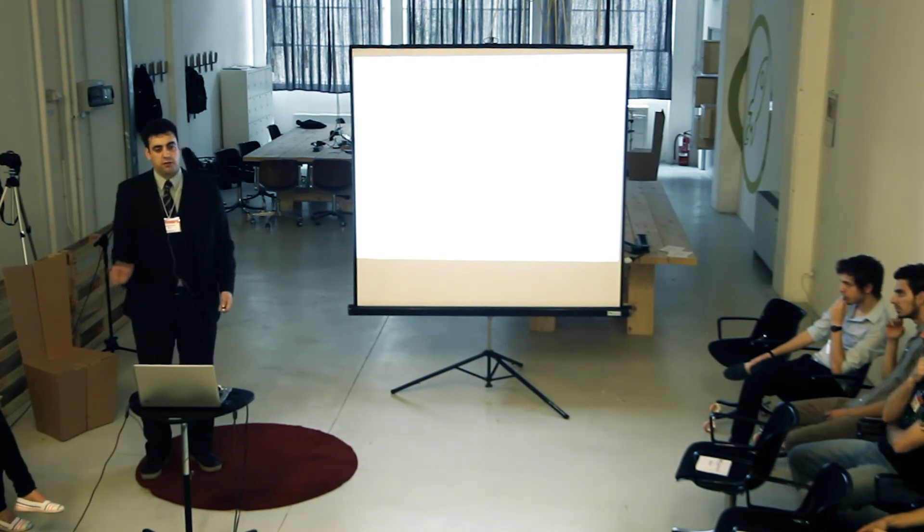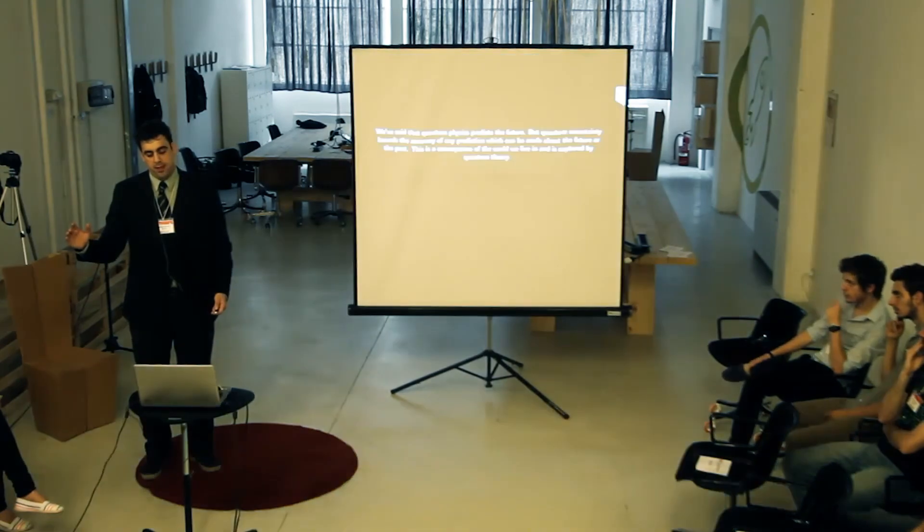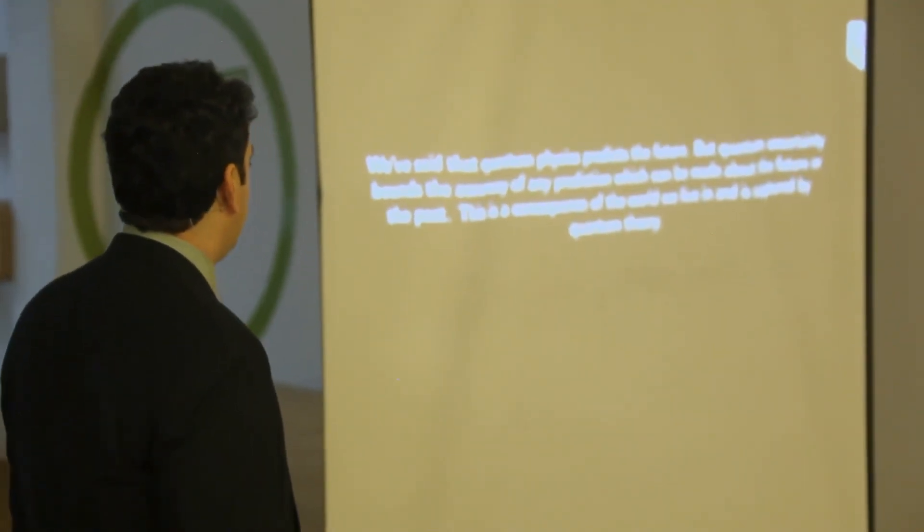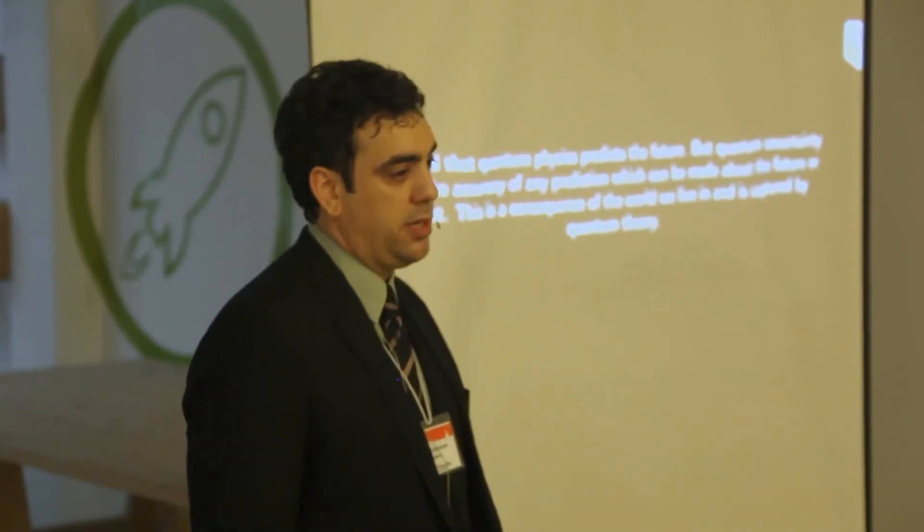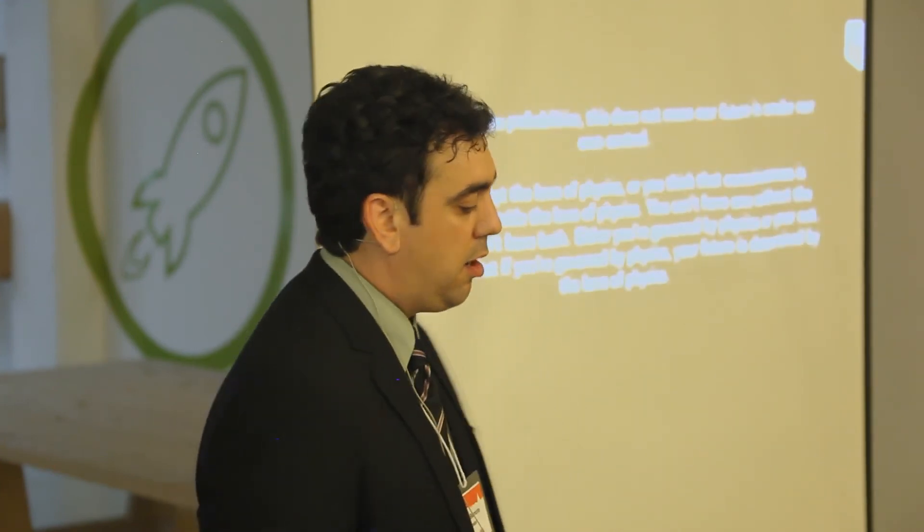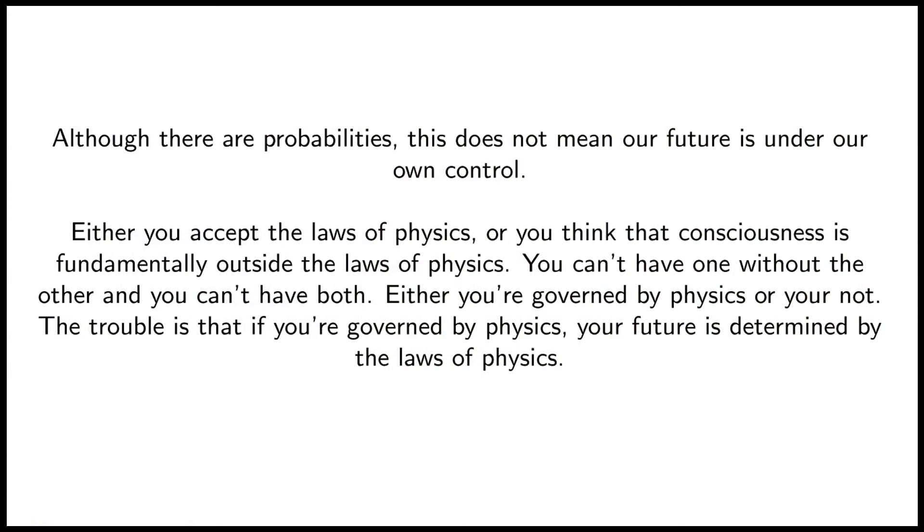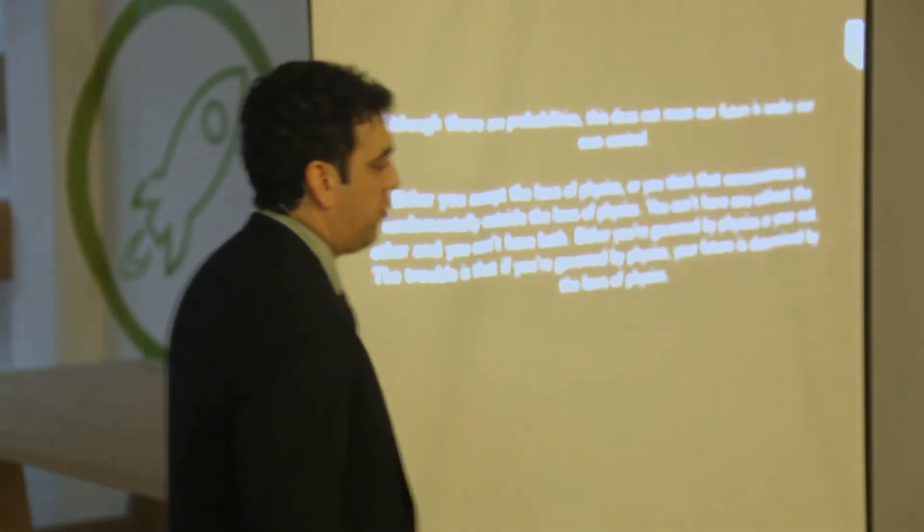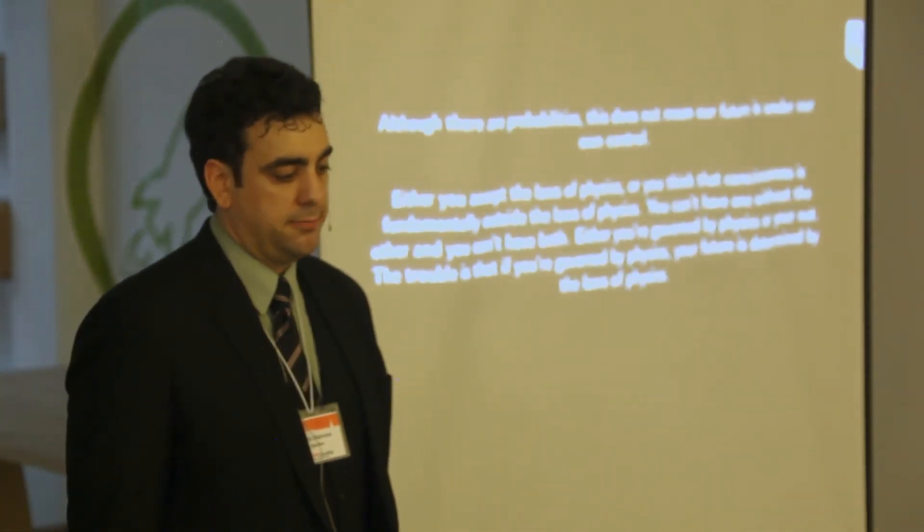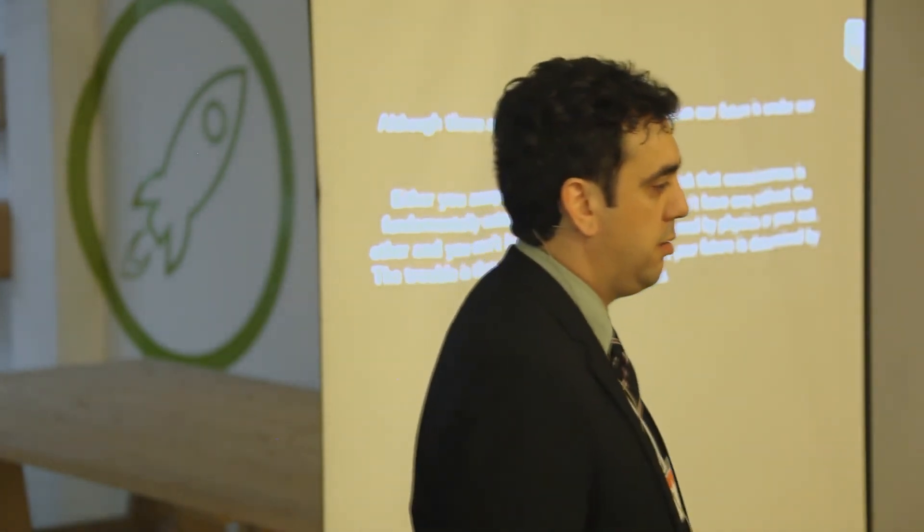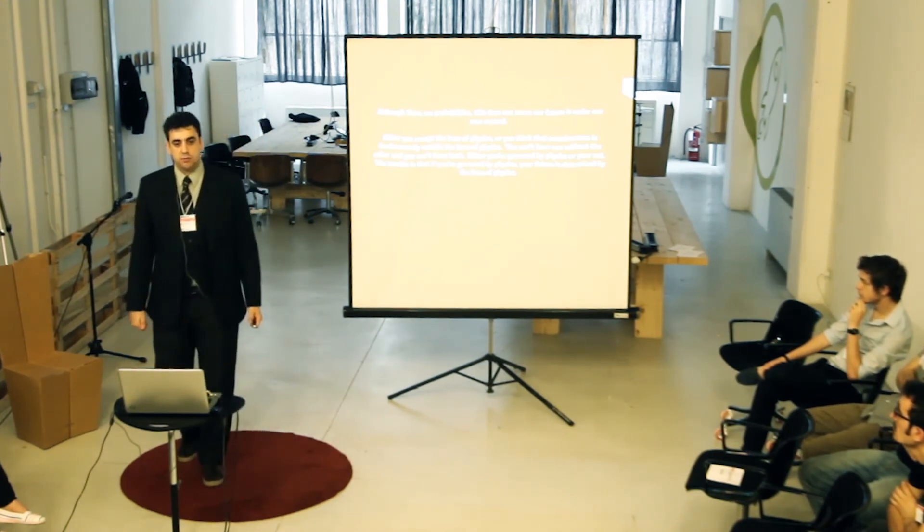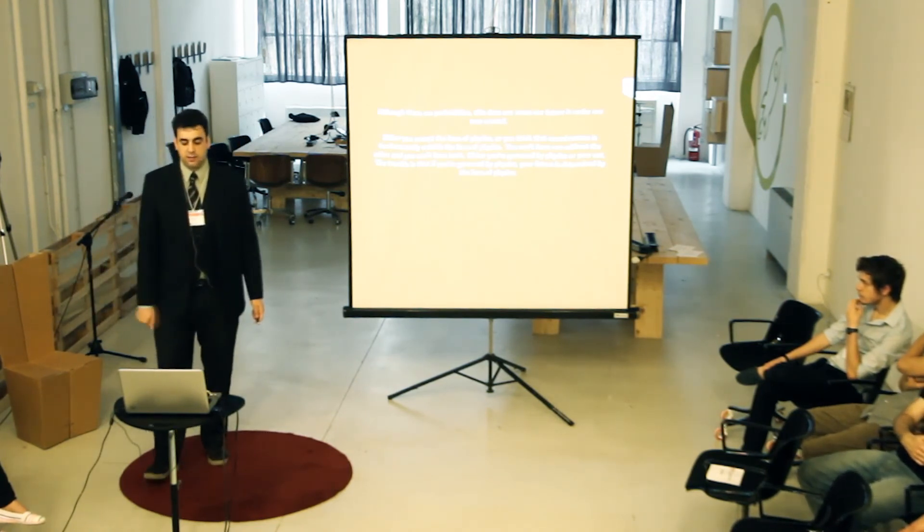So to conclude, I'm going to go just one level. It's going to get a little bit worse now. So today we've said that quantum physics predicts the future, but quantum uncertainty bounds the accuracy of any prediction which could be made about the future or the past. And this is a consequence of the world we live in and is captured by quantum theory. Although there are probabilities, this does not mean our future is under our own control. Either you accept the laws of physics or think that your consciousness is fundamentally outside these laws. And you can't have one without the other and you can't have both because they mutually contradict each other. And the trouble is if you're governed by physics, then that's what you're governed by. And human beings, we don't like this. We don't like this idea. Perhaps it is because the very essence of our being relies on our ability to make choices and change the future for our own survival. So this contradicts us at the core of our instincts.